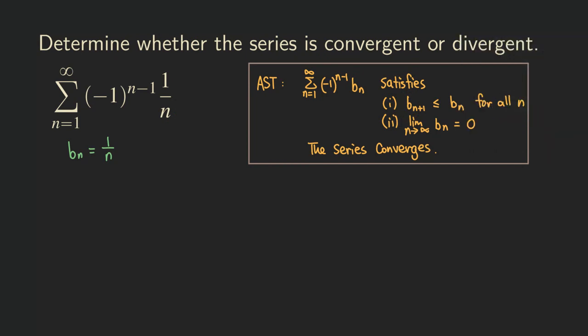Let's check the first requirement. For the first requirement, we consider the next term, which is b_{n+1}, which is going to be 1 over, what is that? That's n+1. Because if the nth term is 1 over n, then the n+1 term is 1 over n+1.